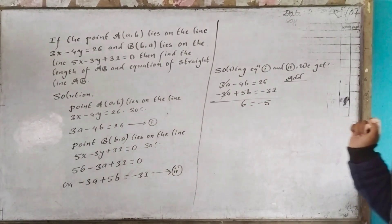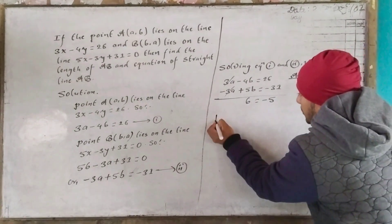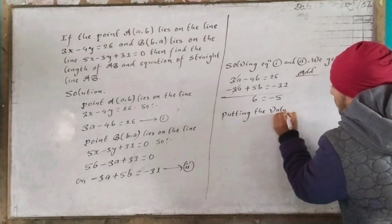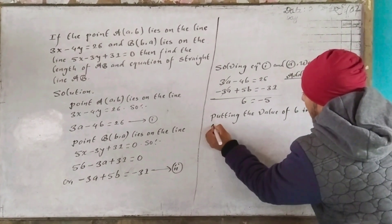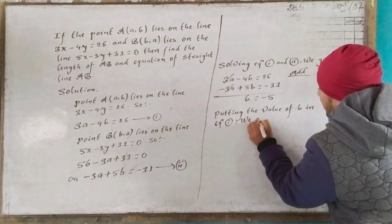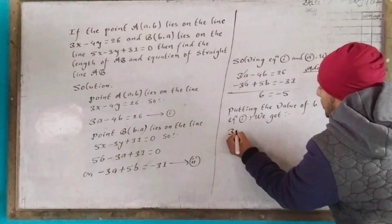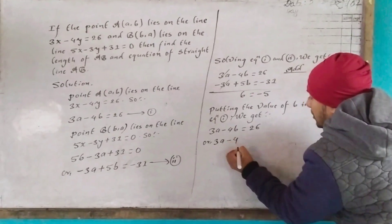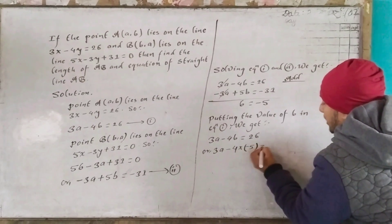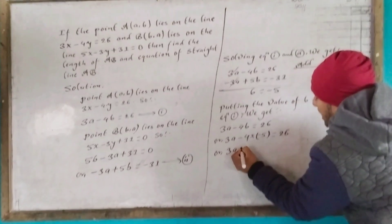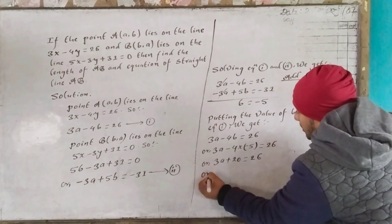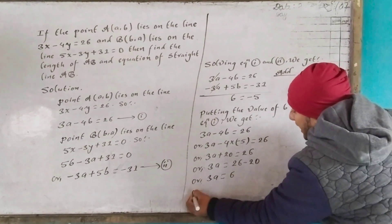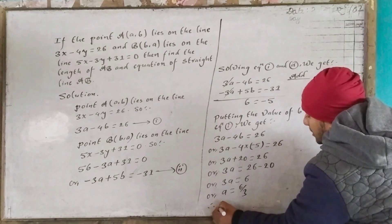Now we know the value of B is minus 5. Putting the value of B into equation 1: 3a minus 4 times minus 5 equals 26, so 3a plus 20 equals 26, therefore 3a equals 6, and A equals 2.